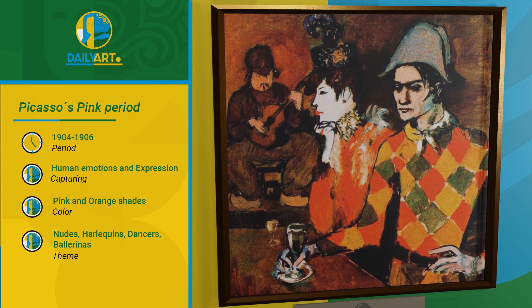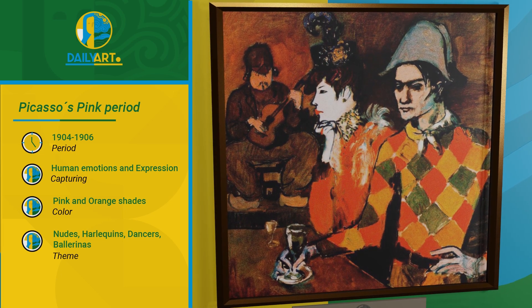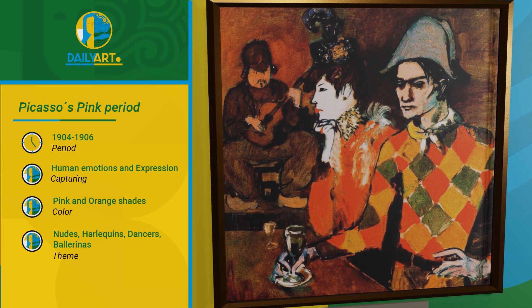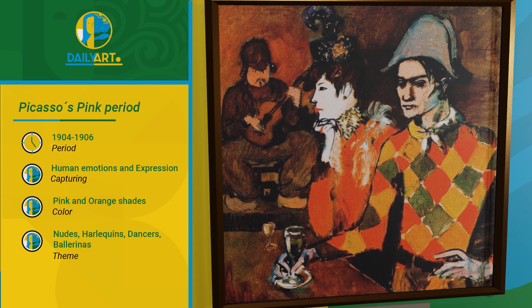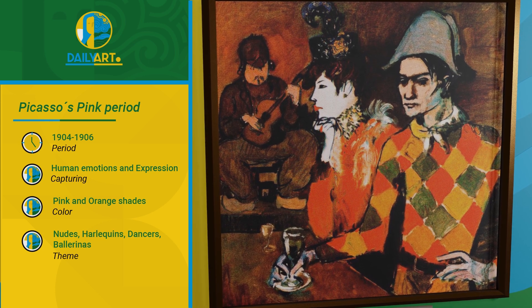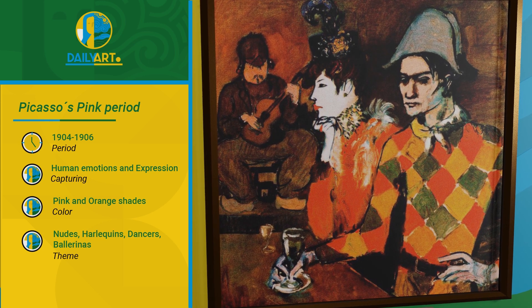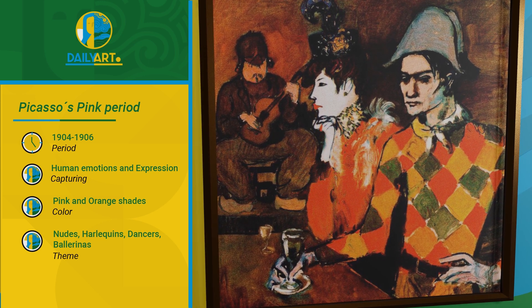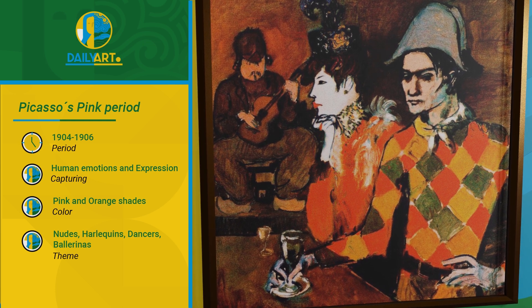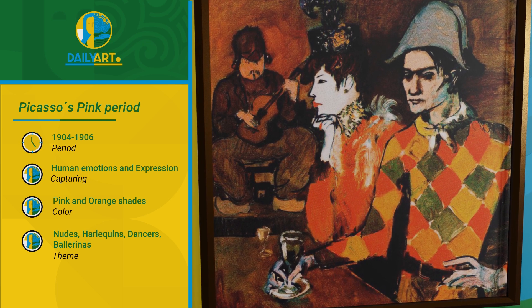Harlequin is holding a glass in the painting, which gives the impression of intimacy and a personal moment. Some interpretations claim that the glass may symbolise the loneliness or melancholy that Picasso explored during this phase of his work.